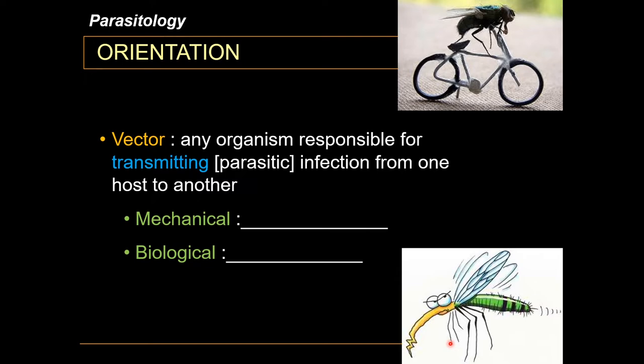A biological vector is an organism which transmits the parasite inside of it, but while the transit is ongoing, the parasite undergoes further development — say from an egg to a larva, or from a larva to another stage of larval development.